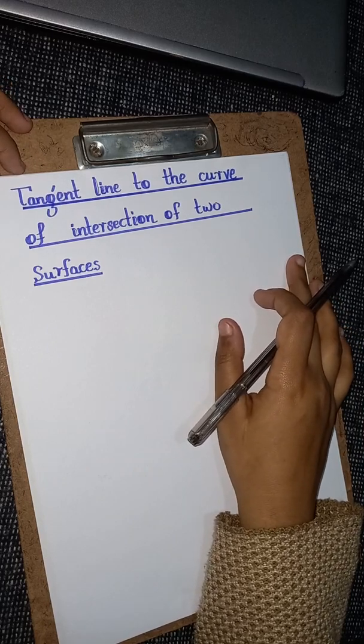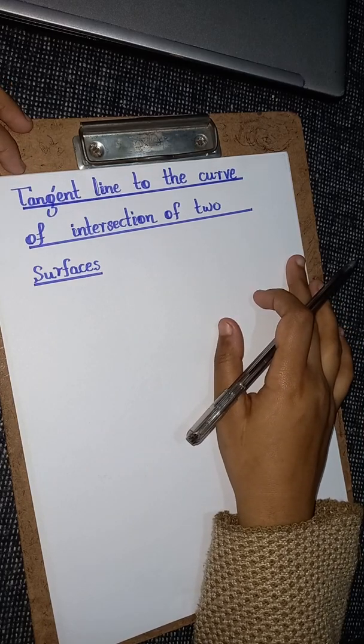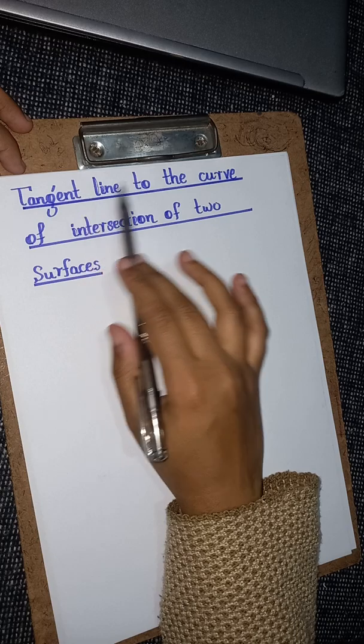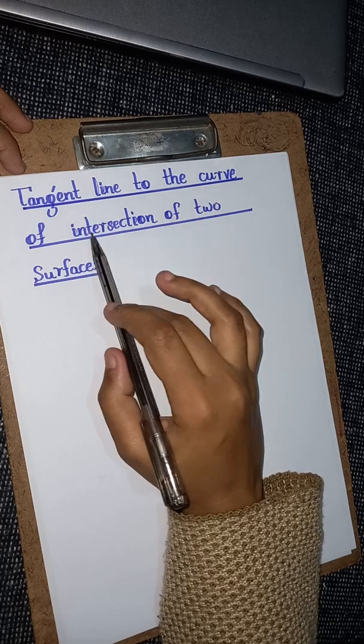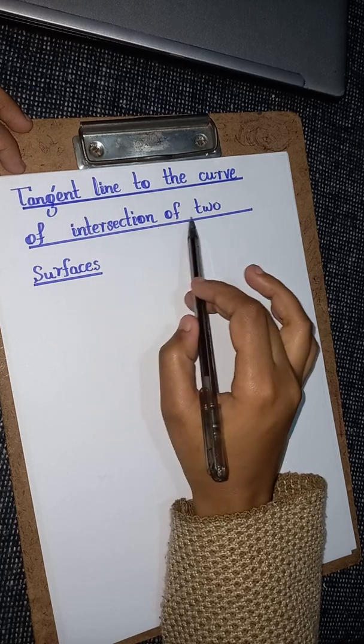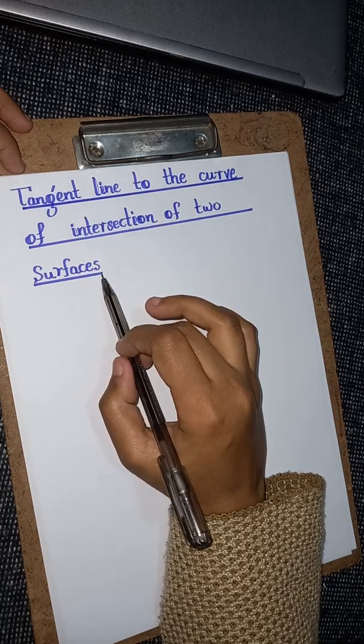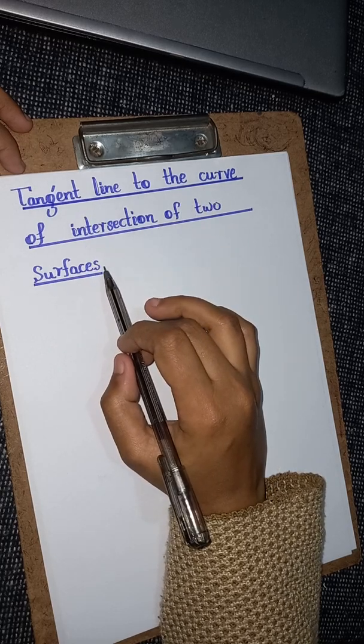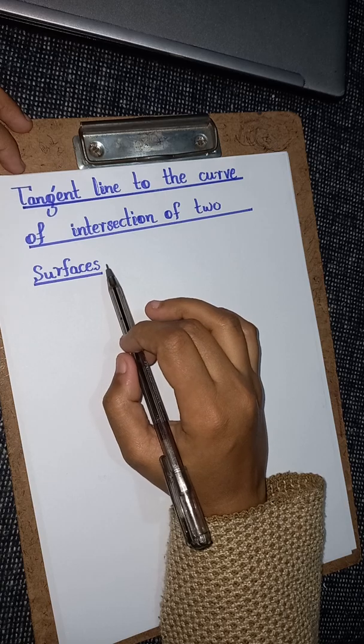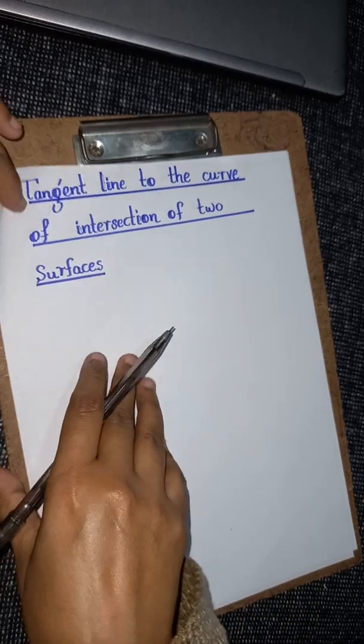In today's lecture we will talk about finding the tangent line to the curve of intersection of two surfaces. First of all, let me explain an idea to you.